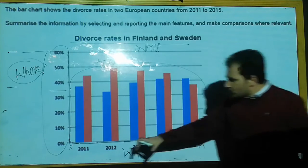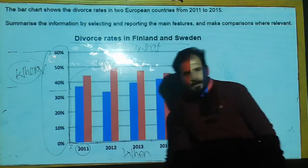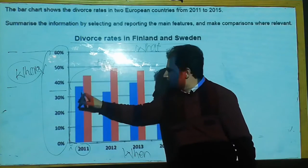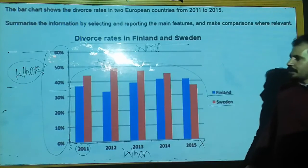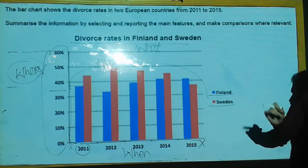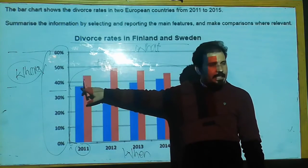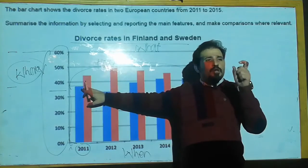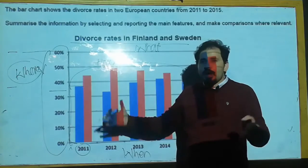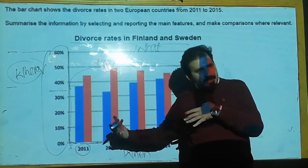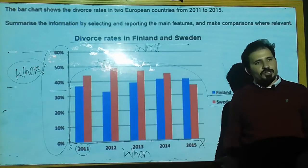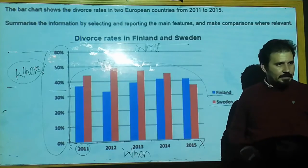The first one is Finland. In 2011, the divorce rate starts with zero and reaches to almost about 38%. The word 'almost' is very important here — 'nearly 38%' — because of approximation words. We use approximation words because we do not know whether it's 38 or 37. So we can simply say, using approximation words, almost 38%.